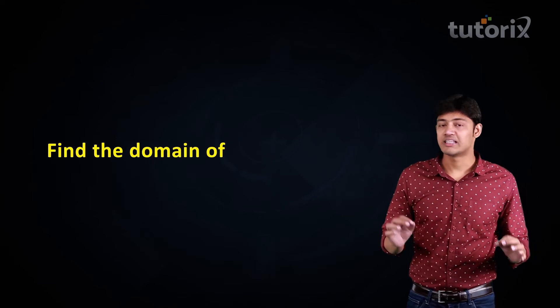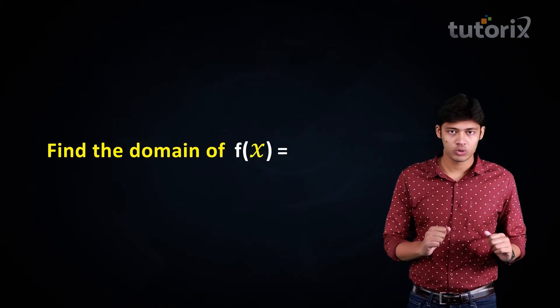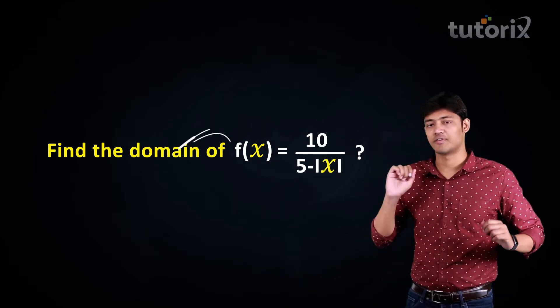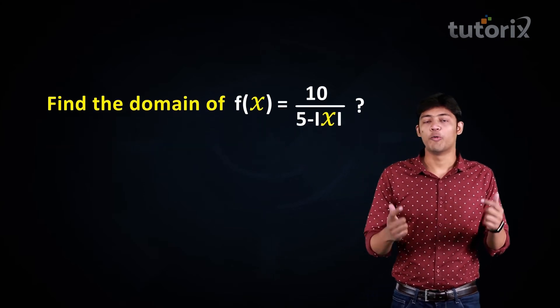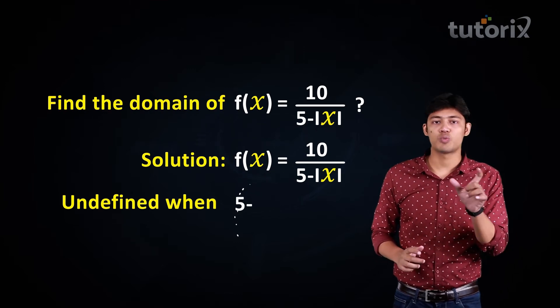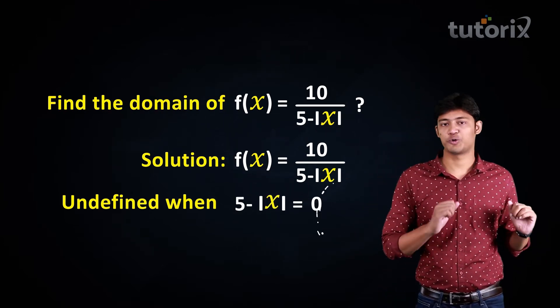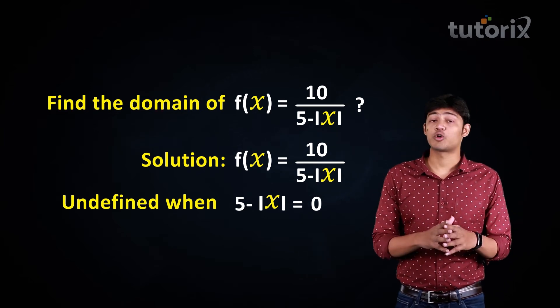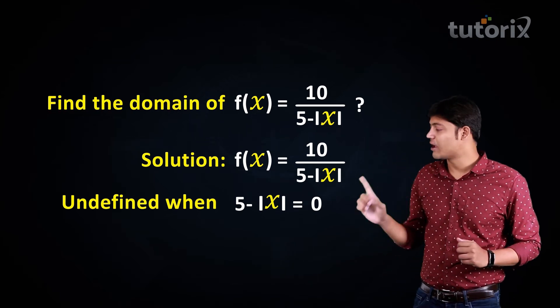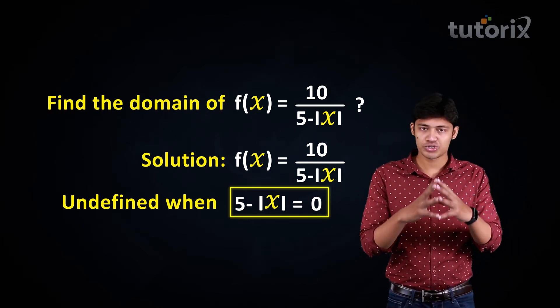Now let's solve a simple problem on the modulus function. The function is f(x) = 10 divided by (5 minus |x|), and we have to find its domain. This function is undefined when the denominator equals zero — that is, when 5 minus |x| equals zero. So from the set of all real numbers, we must remove those values of x for which 5 minus |x| equals zero.